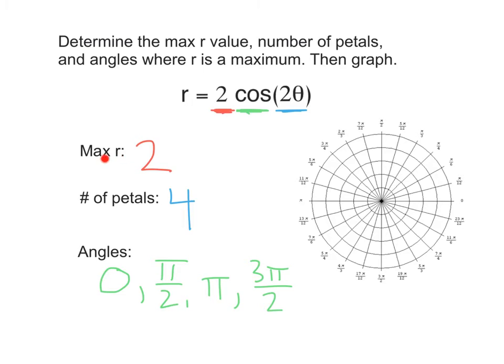Now, we're finally ready to graph. We've got a max value of two starting at zero, so I'm going to graph zero, two, dot right there. Then, my next max value is going to be at pi over two. It's going to be about there. Then, I've got another max value at pi. That's going to be about there. Then, our last one is at three pi over two, which is about there.